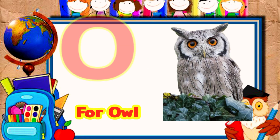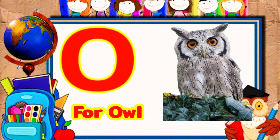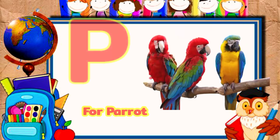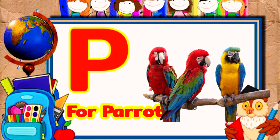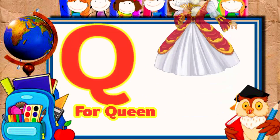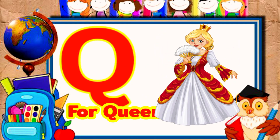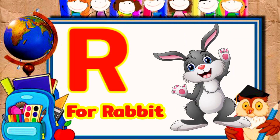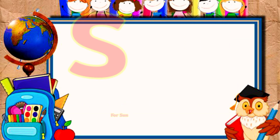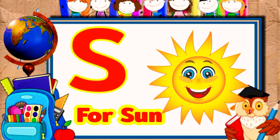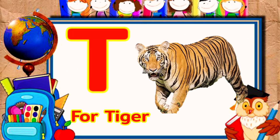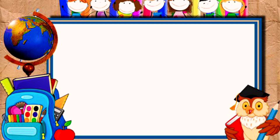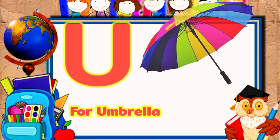O for owl, P for parrot, U for queen, R for rabbit, S for sun, E for tiger, U for umbrella.